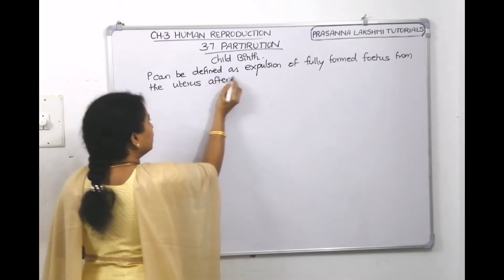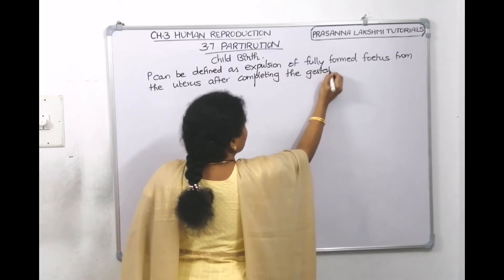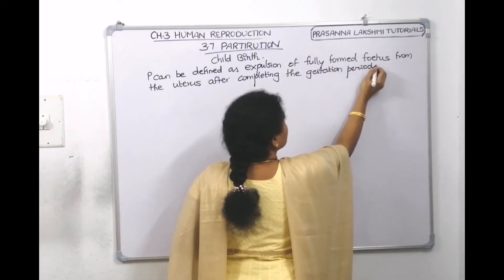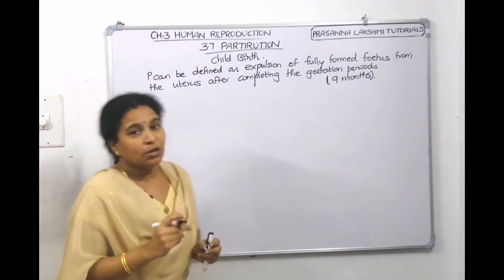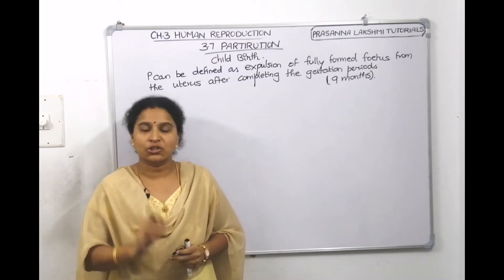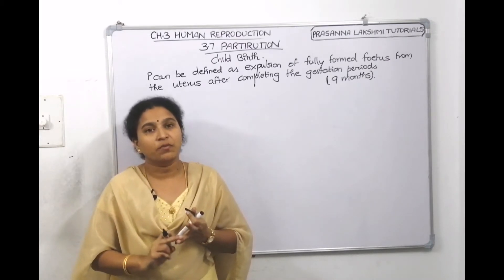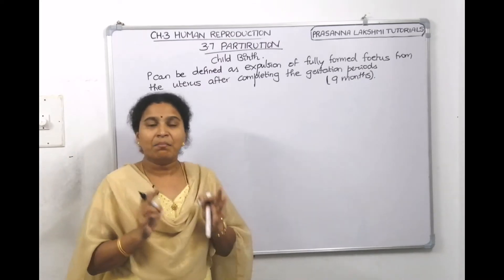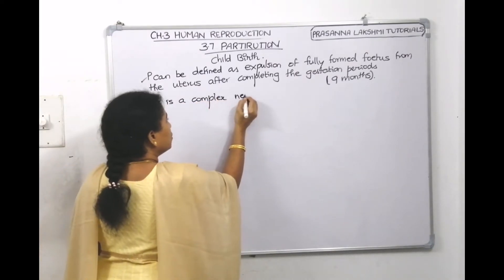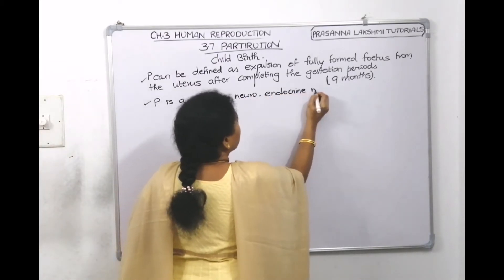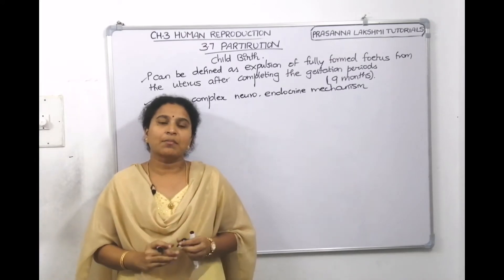After completing the gestation period — roughly nine months for humans — the fully formed fetus tries to come out, and this process is called parturition or childbirth. Parturition is a complex neuro-endocrine mechanism, involving both neural signals and endocrine hormones to facilitate the baby coming out.